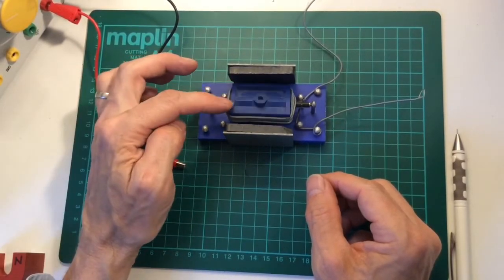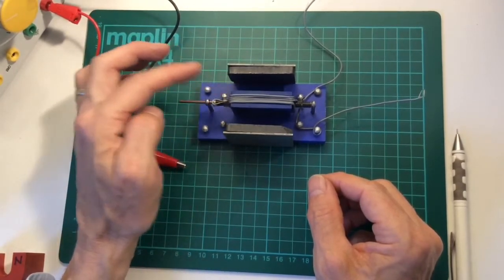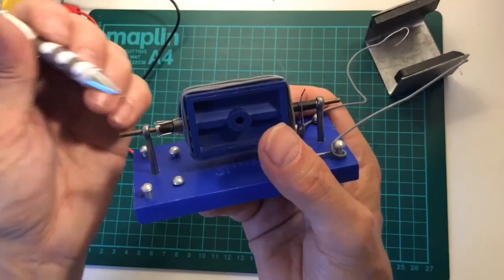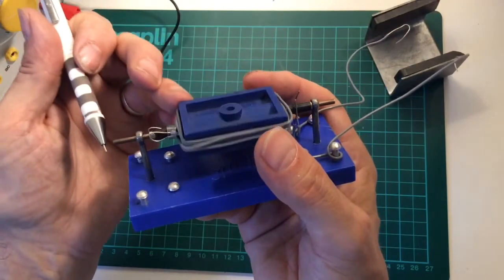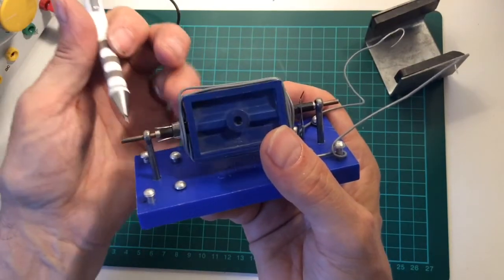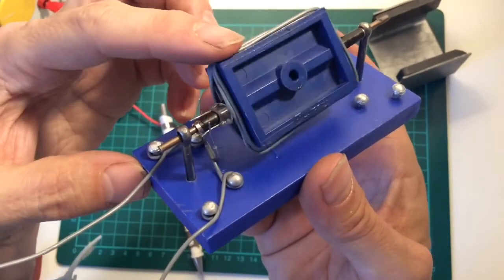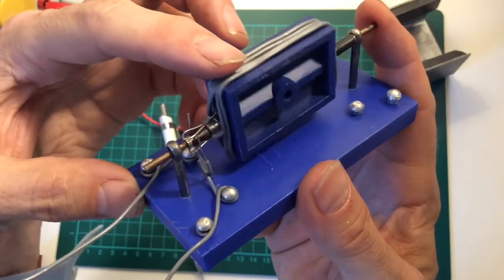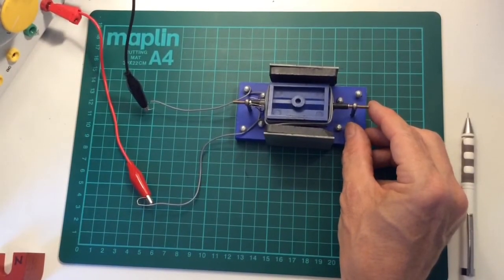So we need to arrange to reverse the current every half a turn so that the coil keeps on turning. We do this by means of the split ring commutator. The two ends of the wire come out here and turn with the coil and a sliding connection makes the contact. These wires slide across the connection and reverse the connection to the coil every half a turn. So let's switch on and see the effect that has.